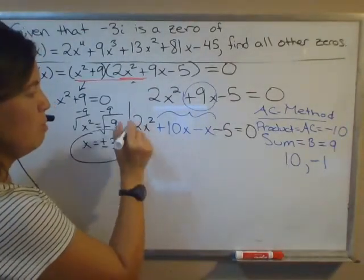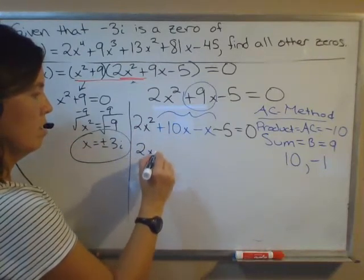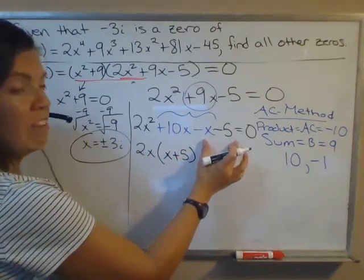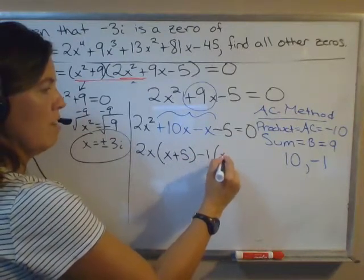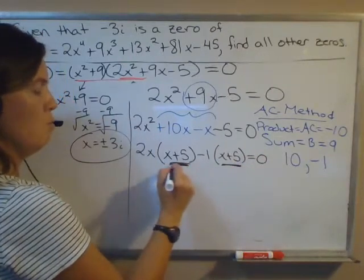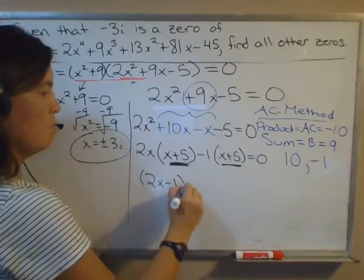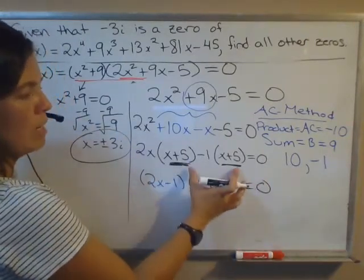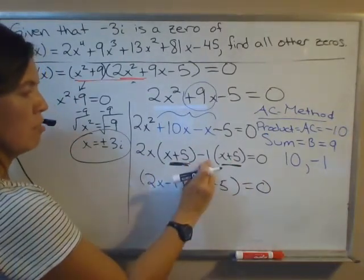Then you should be able to factor by grouping. If we look at these first two terms, the common factor would be 2x. If you factor out 2x, you'll be left with x + 5. Looking at these second two terms, they have a common factor of -1, and what's left would be x + 5. These two factors match, so we can factor by grouping: (2x - 1)(x + 5). If we factor out x + 5, what's left is 2x - 1.